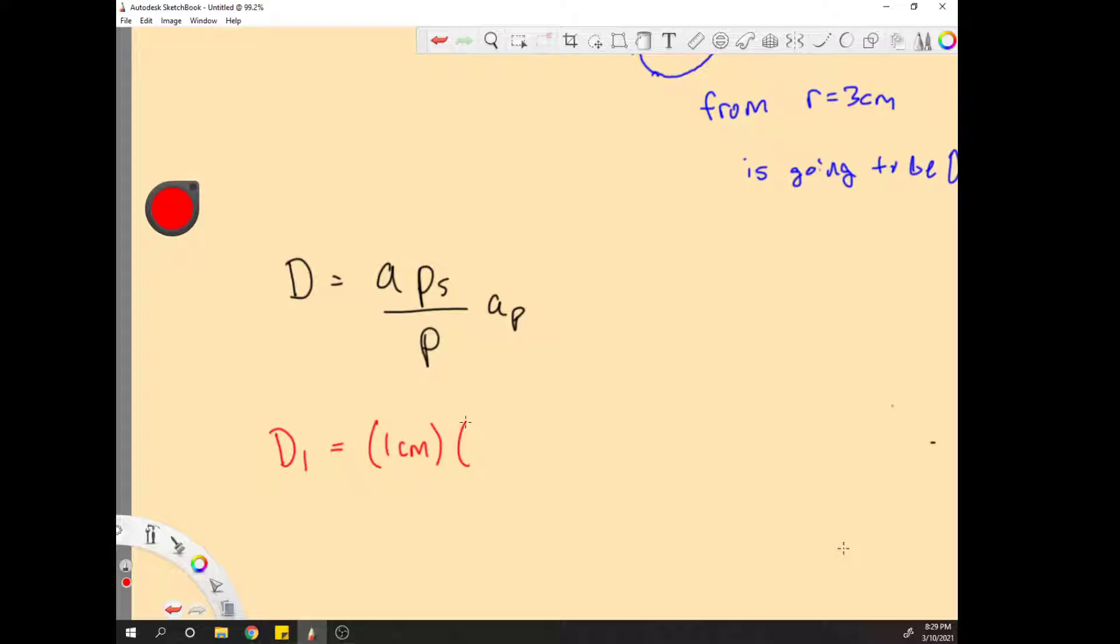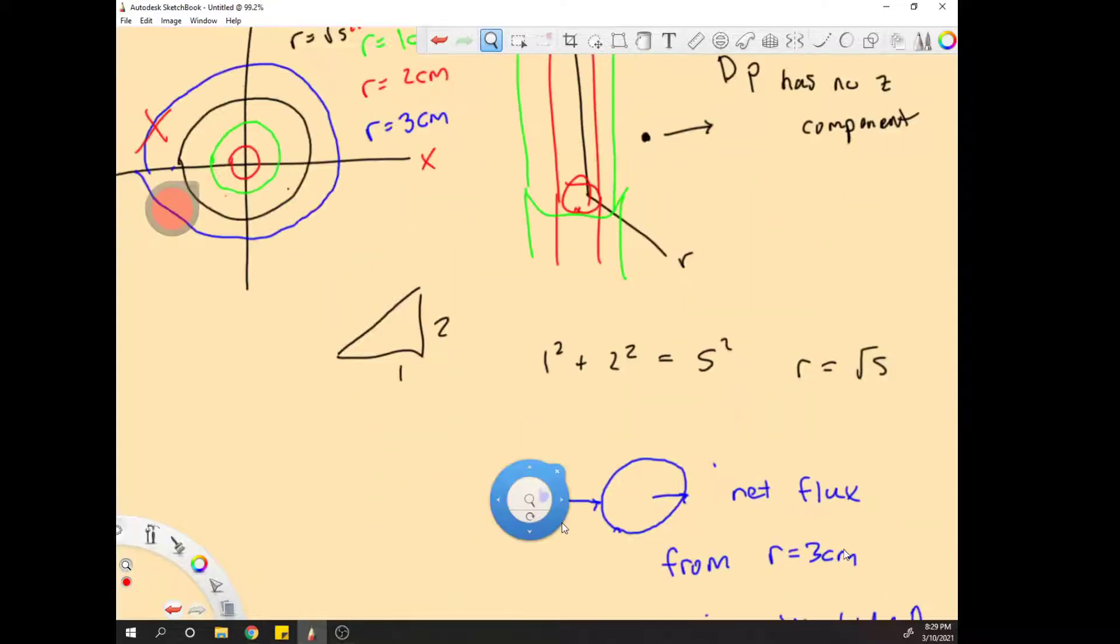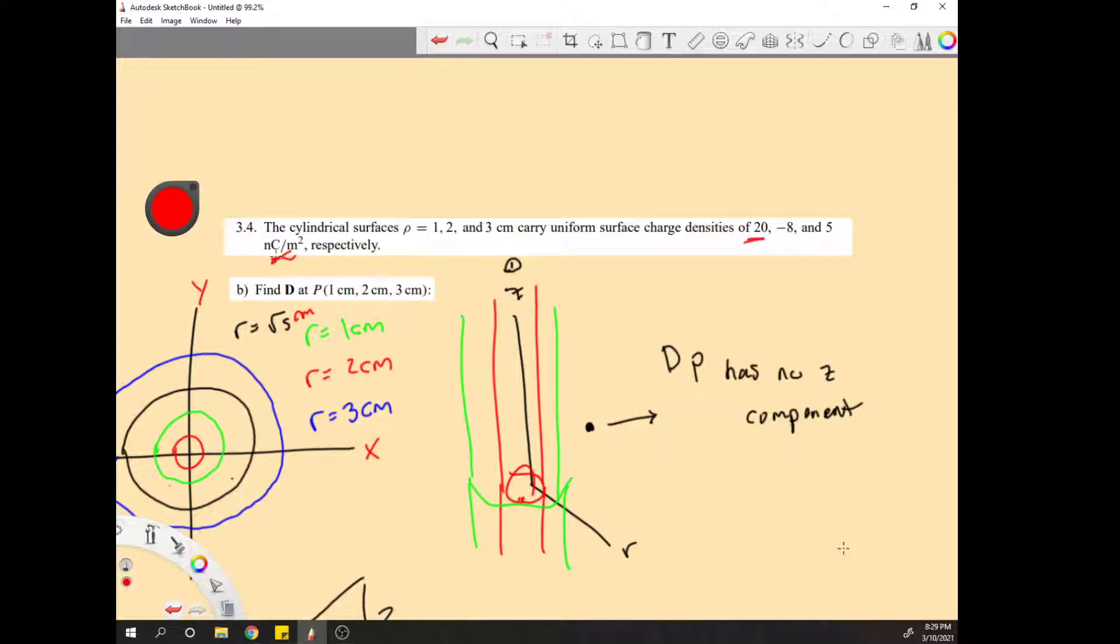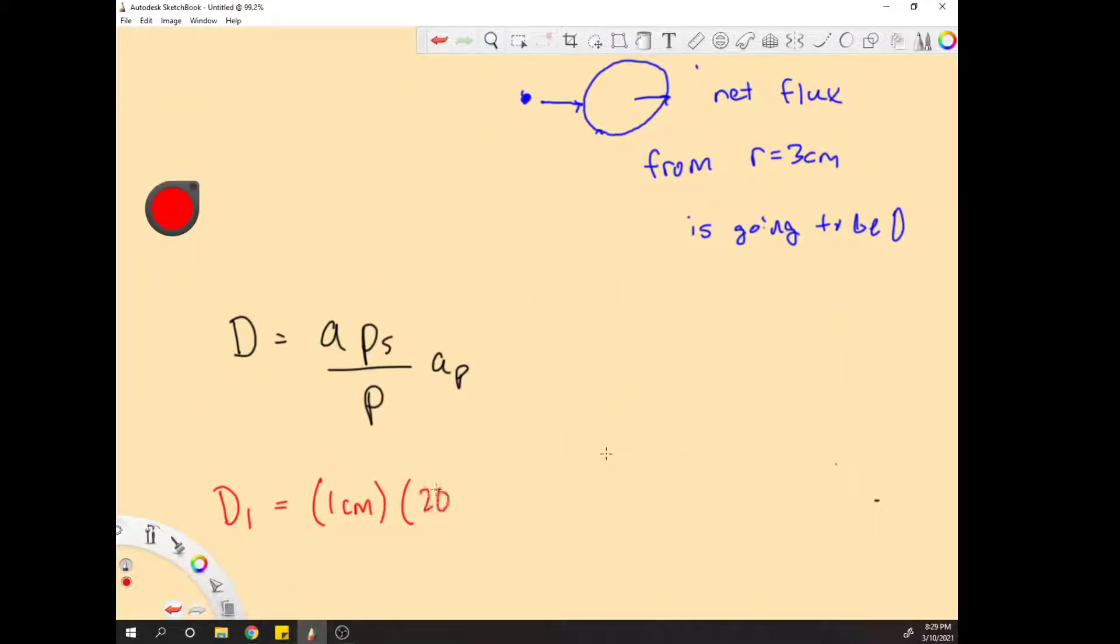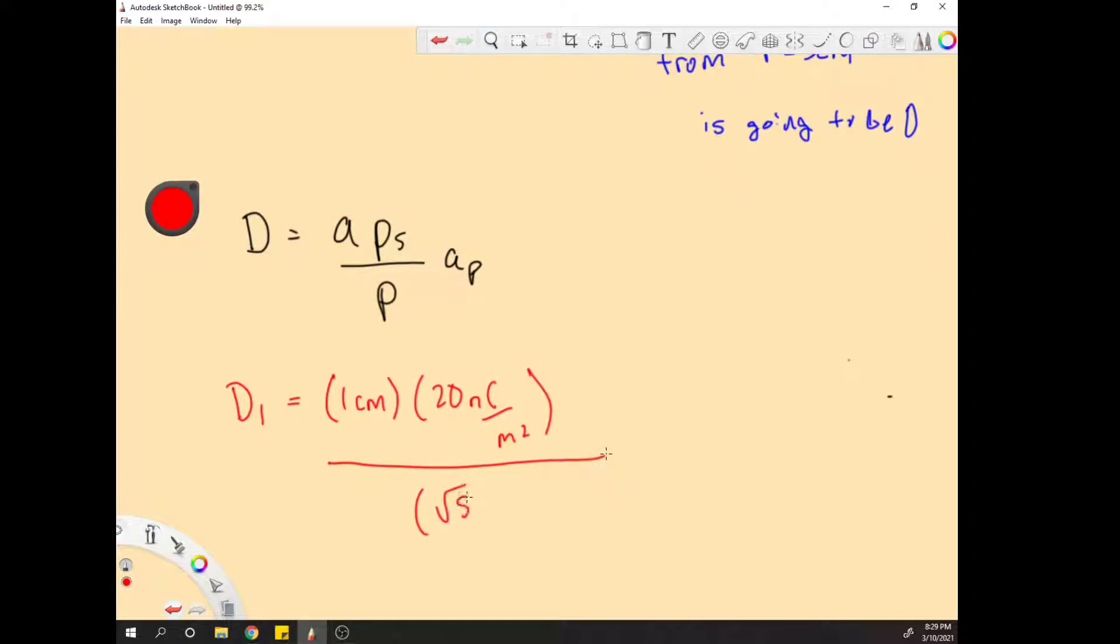One centimeter here times 20 nanocoulombs per meter squared over minus five centimeters in the a rho direction.